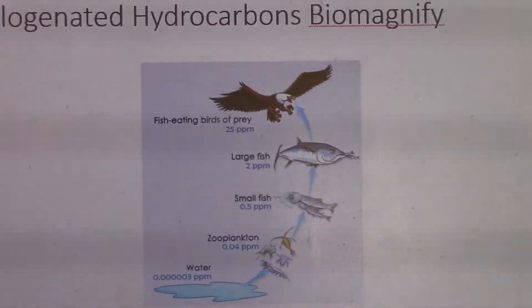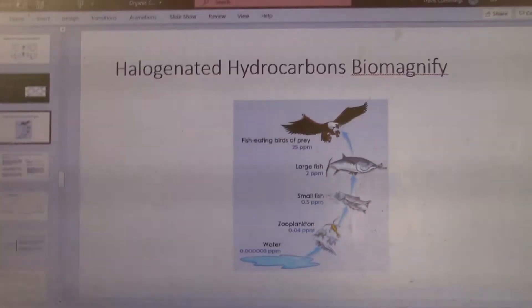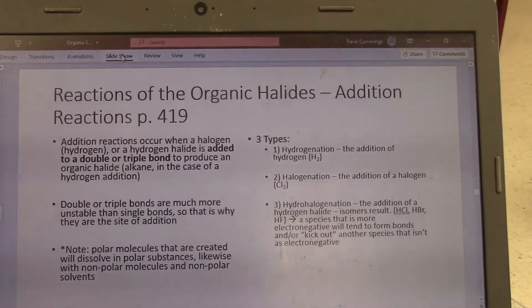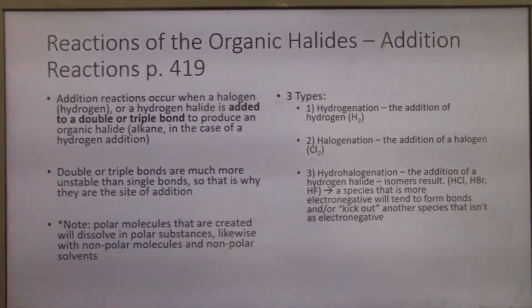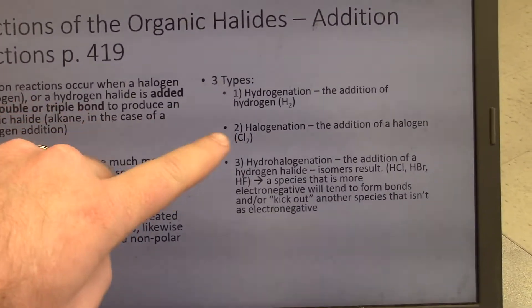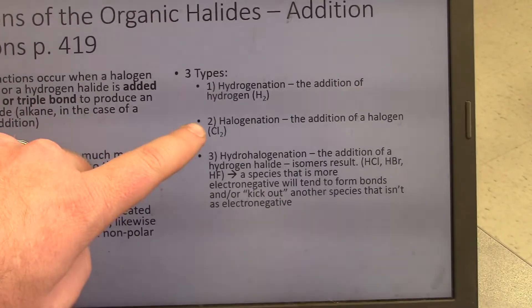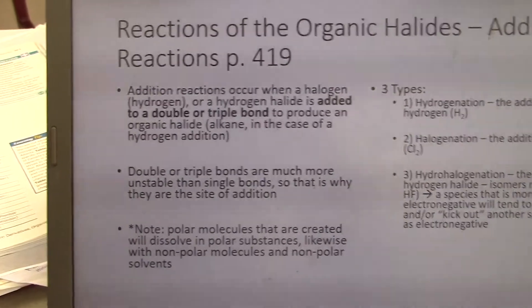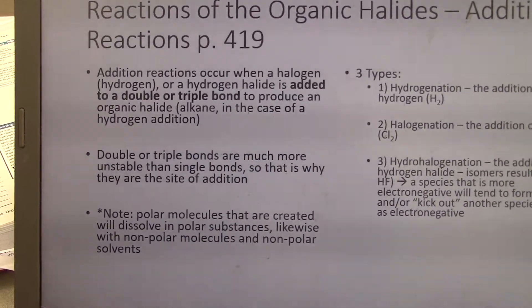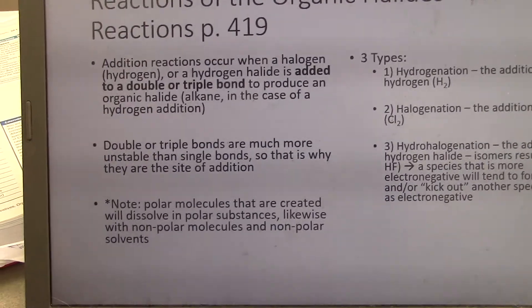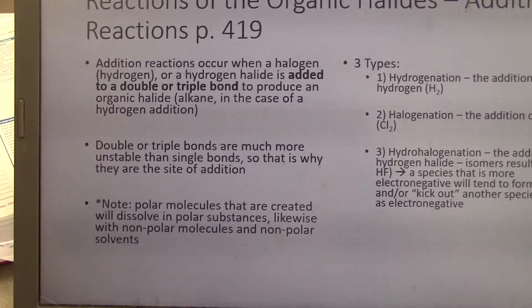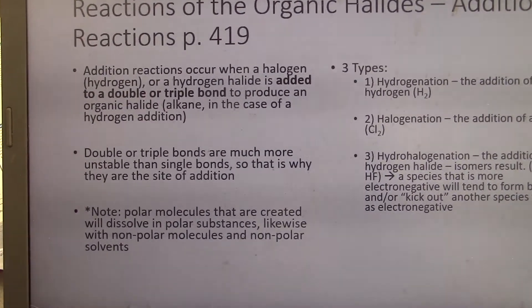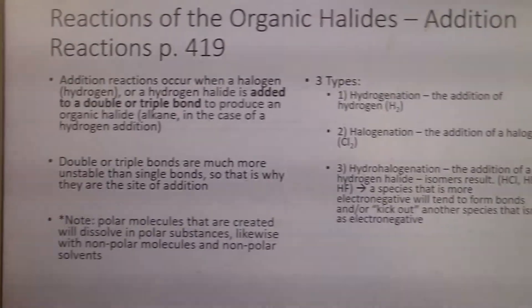We need to be aware of that when dealing with halogenated hydrocarbons because they don't break down in natural ecosystems. Halogenated hydrocarbon reactions occur mostly by addition reactions. There are three main types: hydrogenation, halogenation, and hydrohalogenation. Addition reactions occur when a halogen or a hydrogen halide — a halogen bonded to hydrogen — is added to an unsaturated hydrocarbon, a double or triple bond, to produce an organic halide.